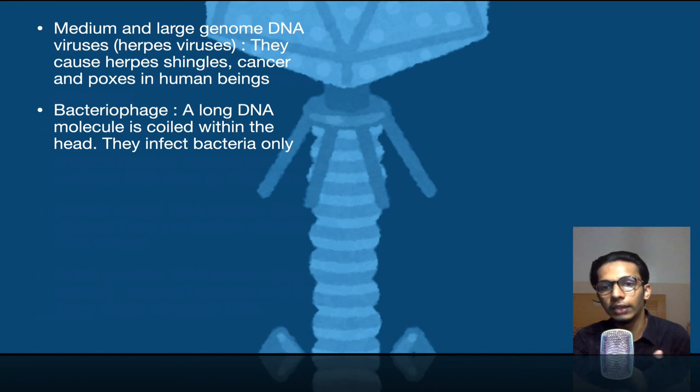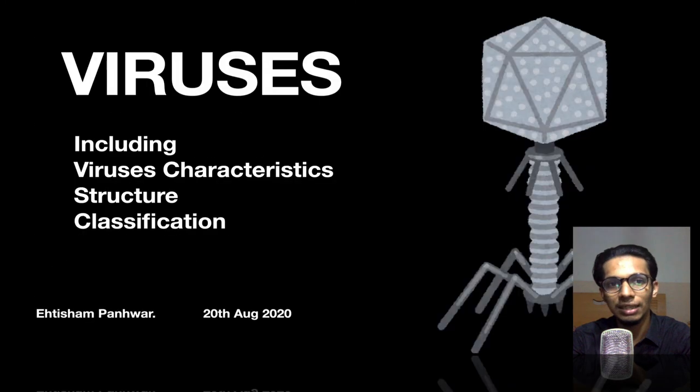Bacteriophages have a long DNA. This is the only virus which has the most advanced DNA. Fortunately, they are affecting bacteria, not us. A long DNA molecule is coiled within the head, just like DNA enclosed inside our nucleus.